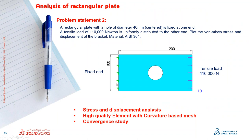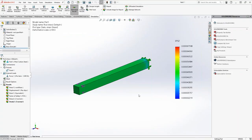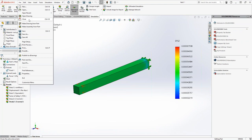Now I have a rectangular plate with a hole of 40 mm diameter centered to the plate. The plate is fixed at one end and has a tensile load of 110,000 Newtons applied at the other end. The size of the plate is 100×200×10 mm thickness. We are going to study the stresses and displacement, and I'm going to show you on the convergence study — how do you conclude that your structural analysis is correct?